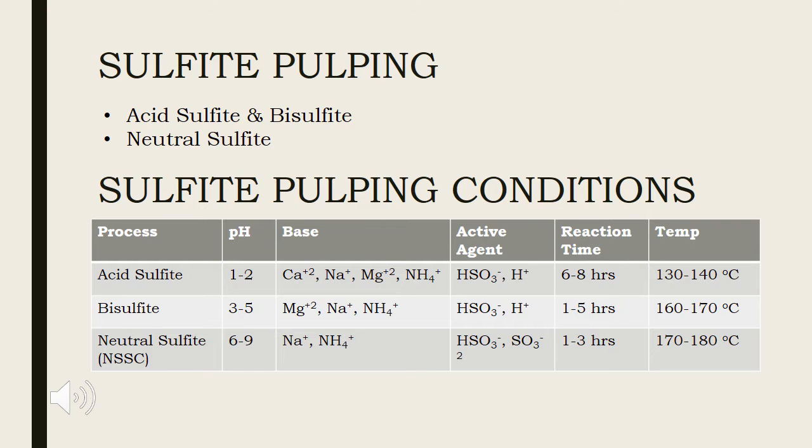Acid sulfite pulping process is carried out with an excess of free sulfurous acid in a range of pH 1 to 2, while bisulfite pulping is carried out under less acidic conditions in a pH range of 3 to 5.